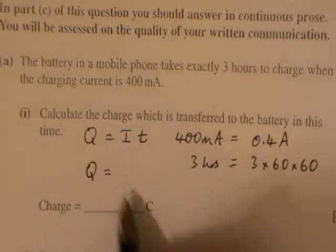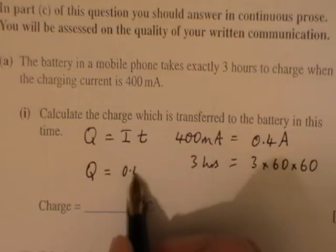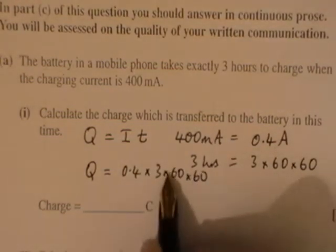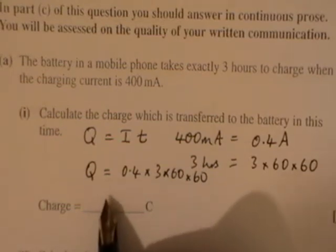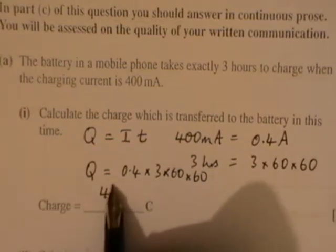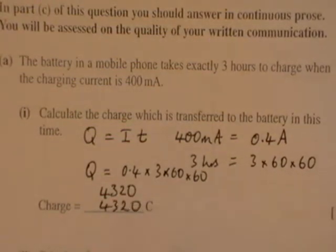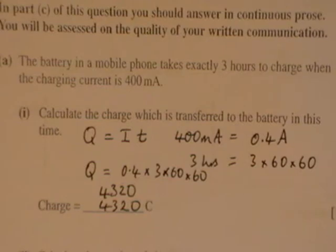So the total charge is equal to 0.4 times 3 times 60 times 60, and when we multiply that all together we get 4320 coulombs. So 4320 coulombs is the charge.